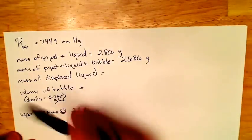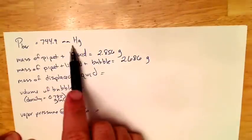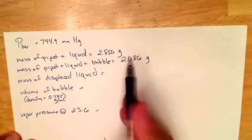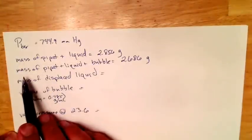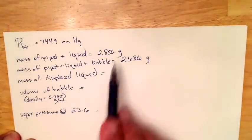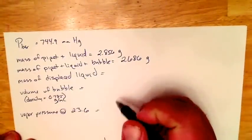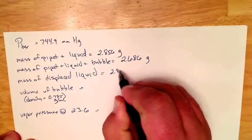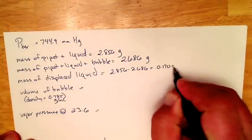Alright, so the things you should have had, some of the things you should have had in terms of measurements, our atmospheric pressure. So this is what I read from our barometer. Once we added a liquid, and I'm not going to tell you what liquid it is, but once we added a liquid to the pipette, we should have a mass. Then once I added the bubble, we should have another mass. So this will tell you then how much liquid was displaced.